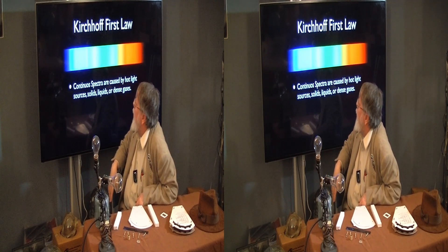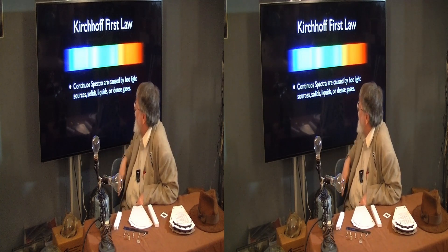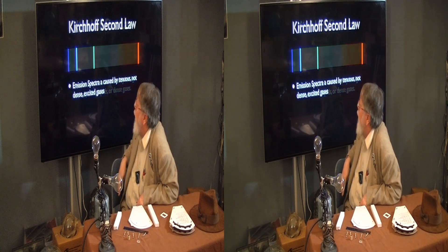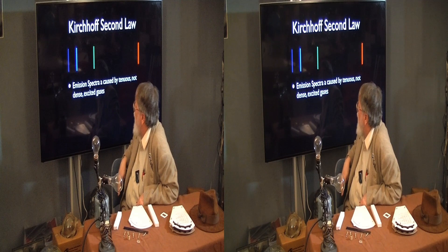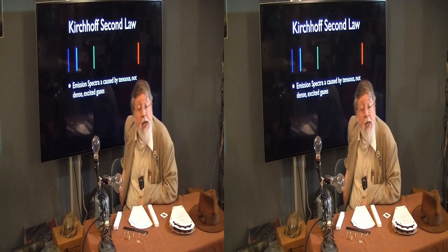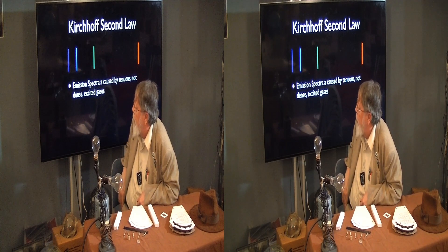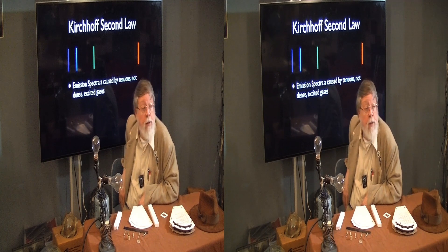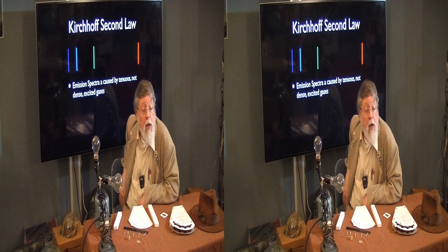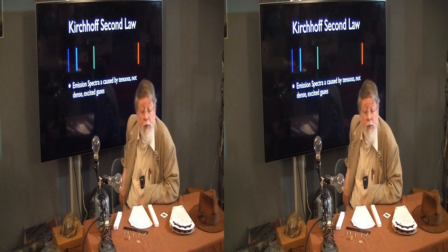There are three laws of Kirchhoff. Kirchhoff's first law: continuous spectrums are caused by hot light sources — solids, liquids, or dense gas. Kirchhoff's second law: emission spectrums are caused by tenuous, excited gases. Fluorescent lights or mercury vapor lights have a discrete emission spectrum, but some of their lines are in the ultraviolet. The white coating inside the fluorescent light absorbs multiple high-energy photons and re-radiates them into the visible.